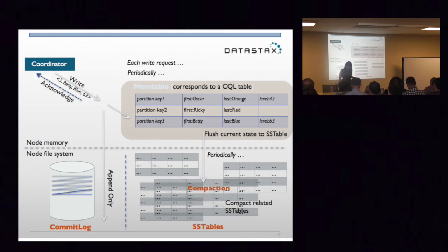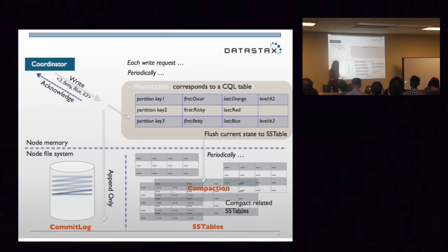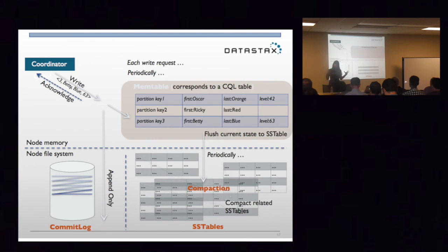It will acknowledge the write, and then periodically the data in memory will flush to disk to something called SSTables — sorted string tables. After a while, we're going to get a lot of SSTables, and this will start to make our data more fragmented on disk, slowing down our reads. So periodically a process called compaction happens. Compaction merges the SSTables into one. Because when you write an SSTable, it's immutable, so compaction goes through and puts them together. That's the write path in Cassandra.